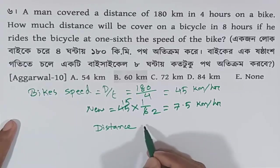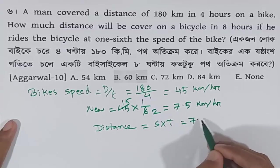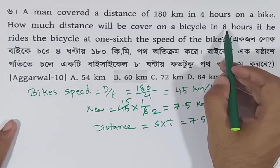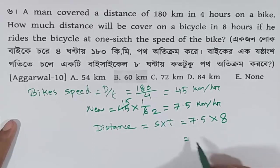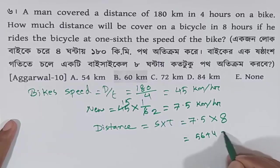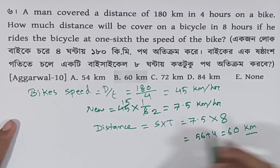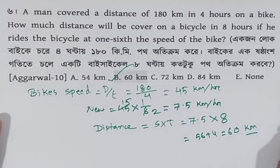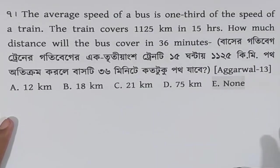After that, distance equals speed multiplied by time — that is 7.5 km per hour multiplied by 8 hours — which gives 60 km. The answer is 60 km. The calculation is correct.